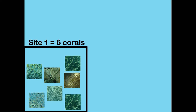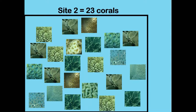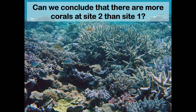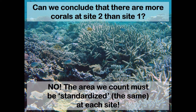If we go to our first site, we might count six corals. If we go to our second site, we might count 23 corals. From these data, can we conclude that there are more corals at site 2 than site 1? No, of course not, because at the second site we counted a larger area.